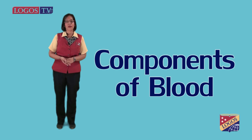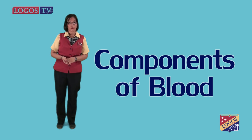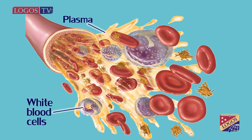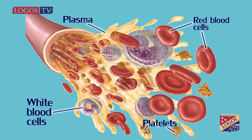Now we're going to talk about the components of our blood. Blood contains the following components: plasma, white blood cells, red blood cells, and platelets. Let's analyze each one.